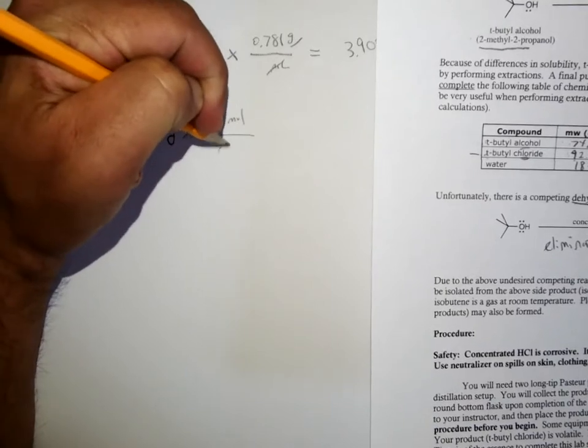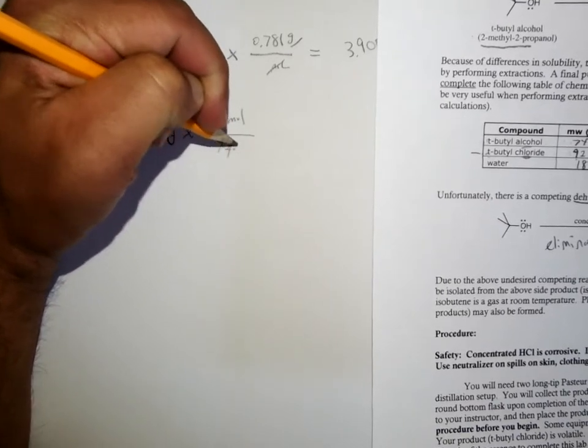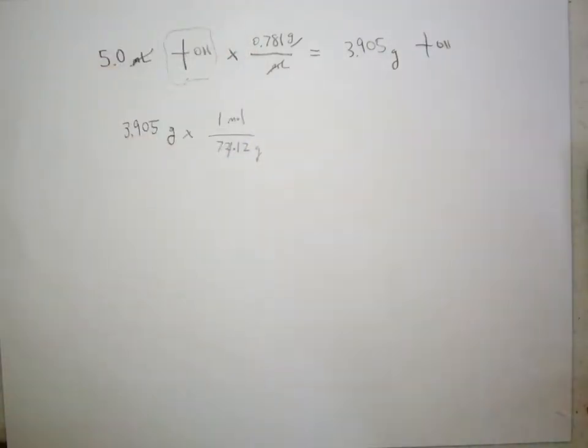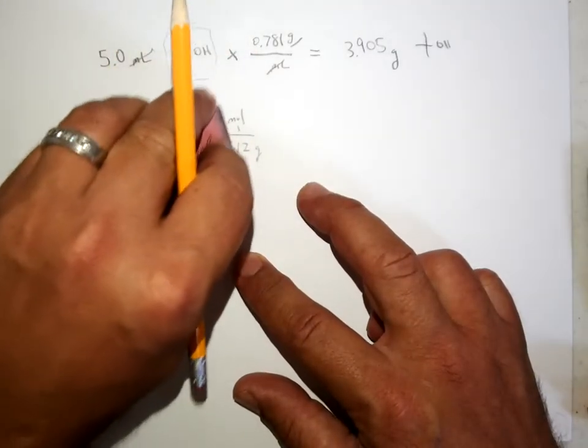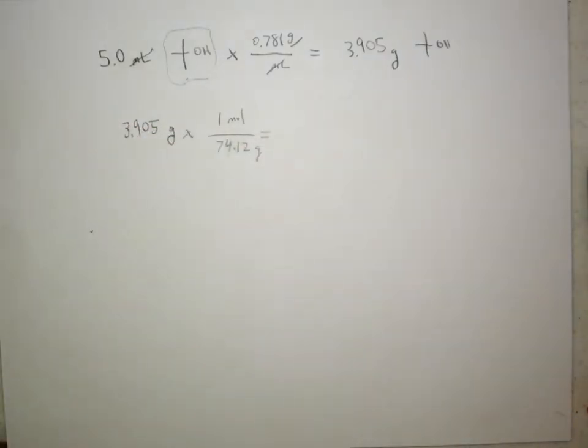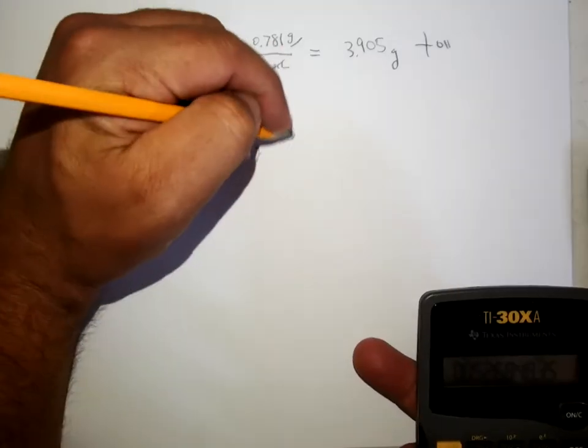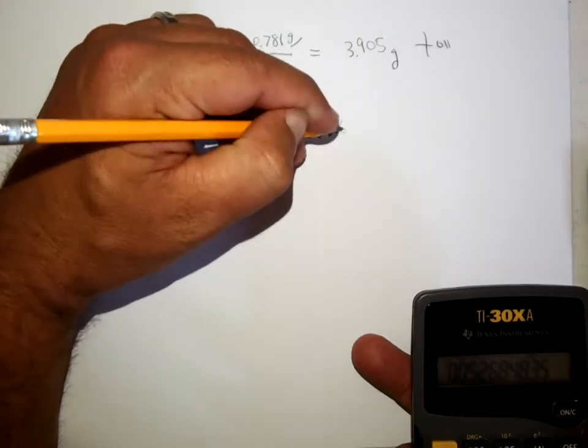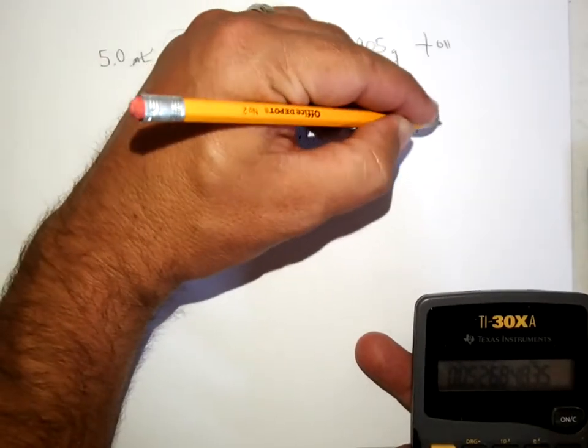So if one mole is 74.12 grams, then we can calculate out the number of moles that are here. So 3.905 divided by 74.12. It's a good idea for you to play along when I'm doing this. Find out that you have 0.05268 moles of t-butanol.